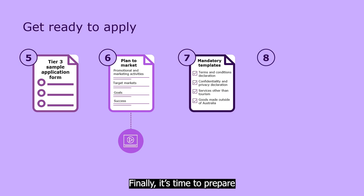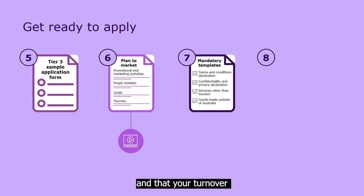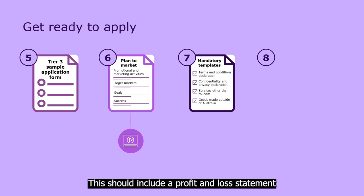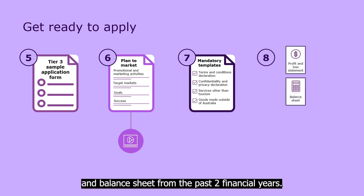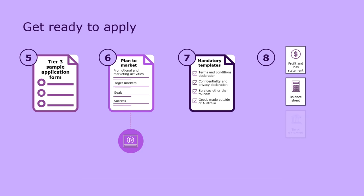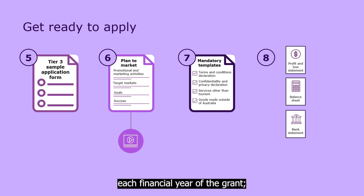Finally, it's time to prepare all the documents that confirm your eligibility. Gather together evidence of recent export sales, and you'll need to show proof that you've been in business for two years and that your turnover is over $1 million. This should include a profit and loss statement and balance sheet from the past two financial years. You'll also need to provide current bank statements showing you have a capacity to spend at least $20,000 of your own money each financial year of the grant.